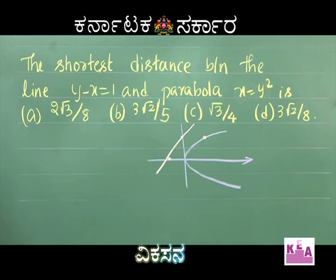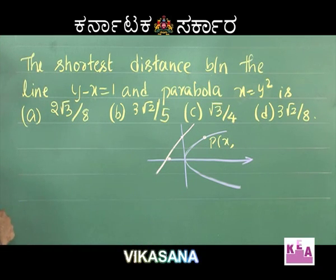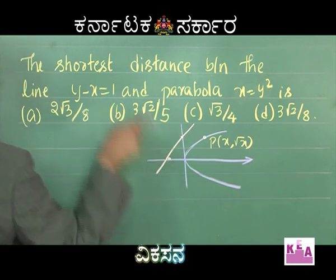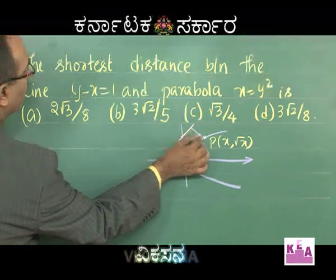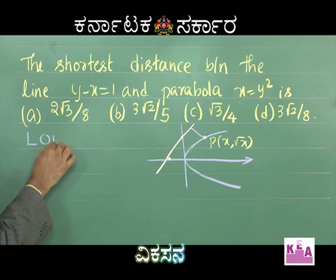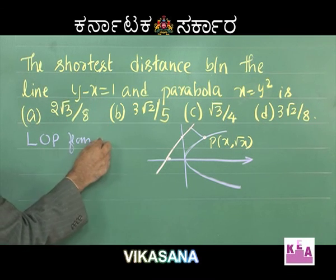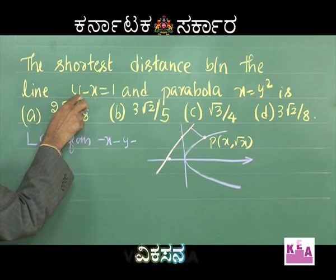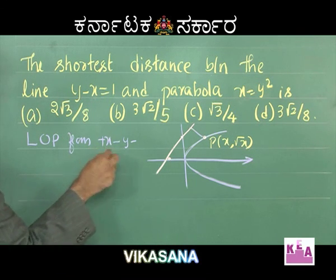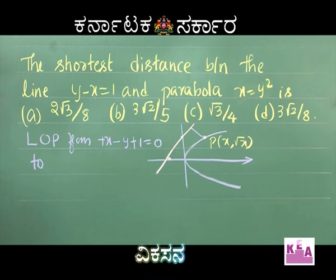We can consider a point P as (x, √x), because x = y² means y = √x. Therefore the point is (x, √x). The line becomes x − y + 1 = 0 in standard form. Length of perpendicular from the line to the point (x, √x):